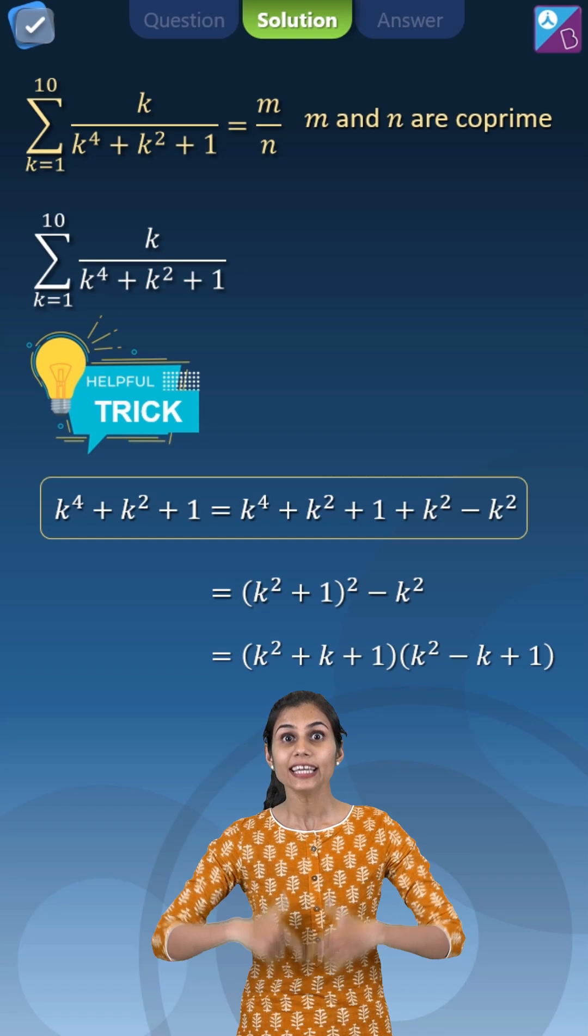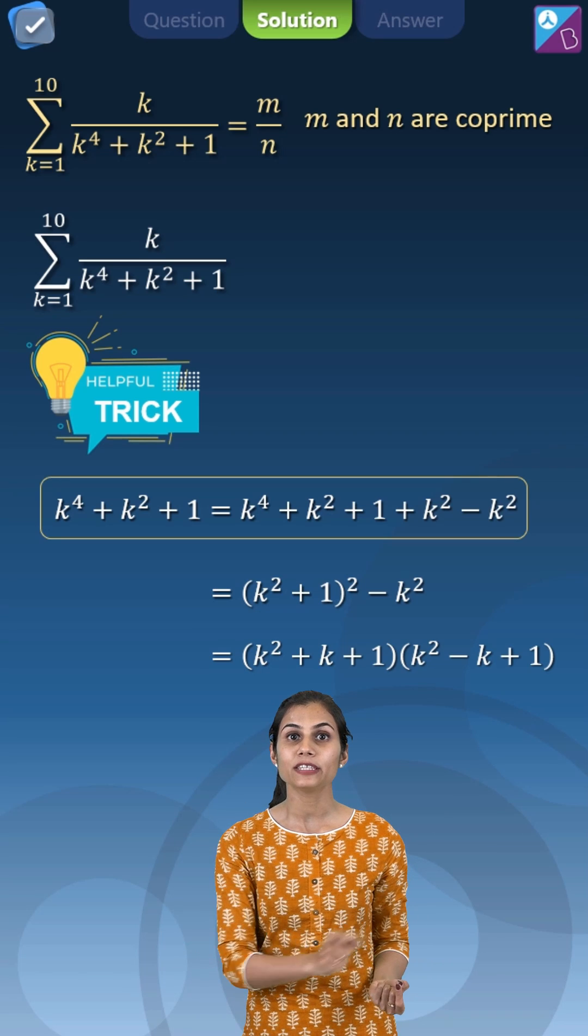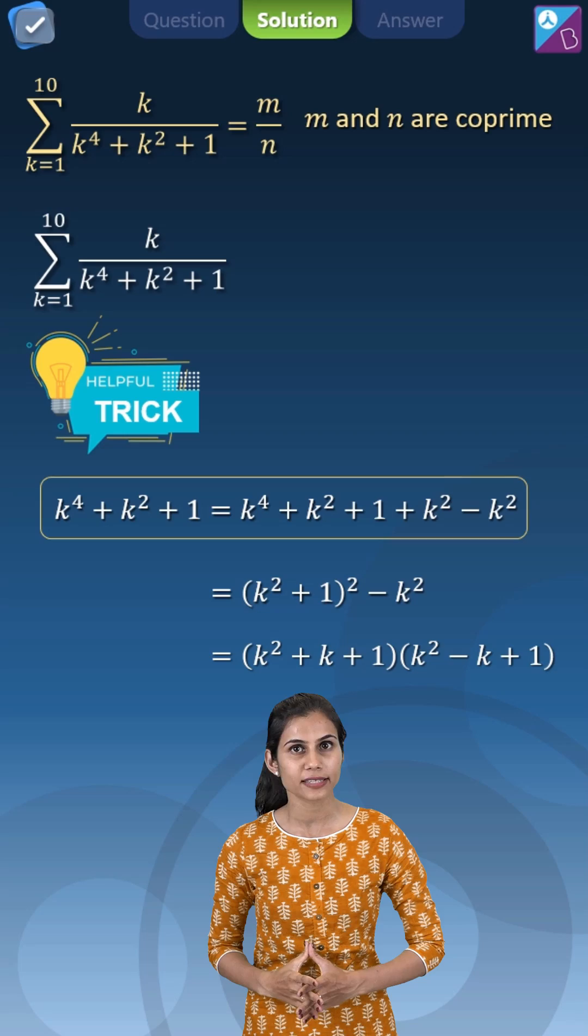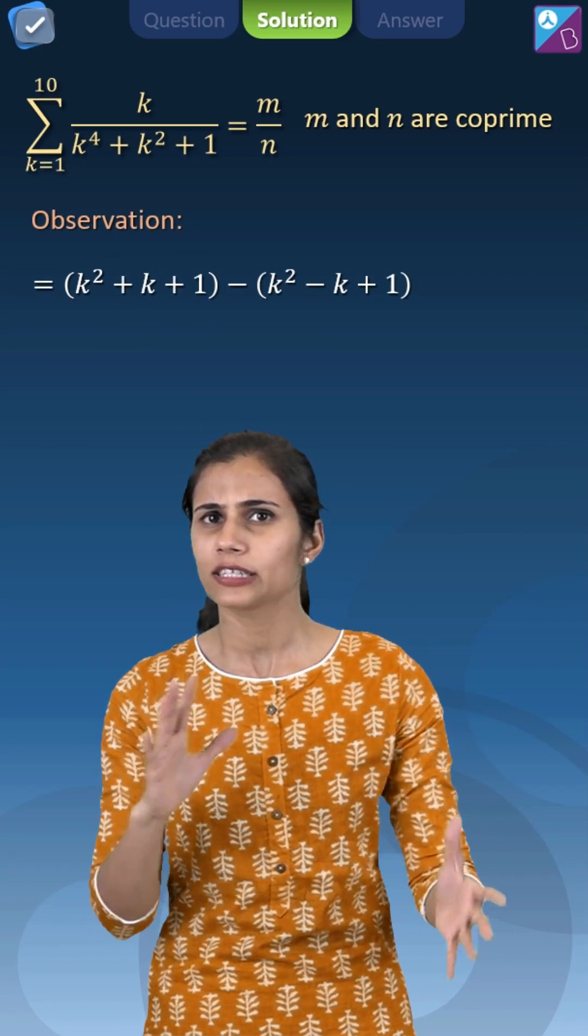So you have successfully rewritten your denominator as the product of two factors. Now the next step is to write the numerator in terms of these two factors. Just try adding both the factors or subtracting both the factors, whatever works.